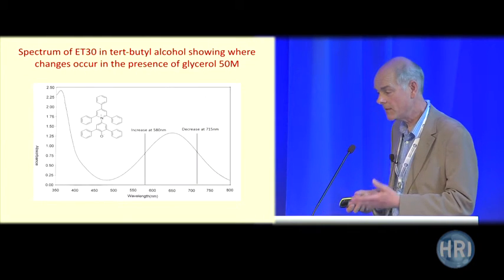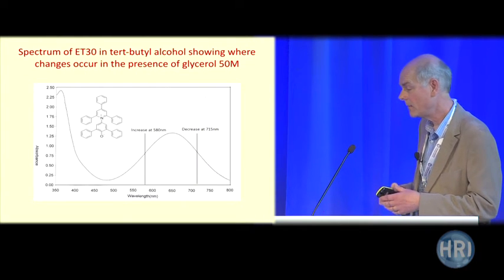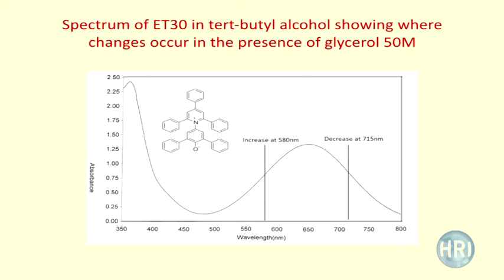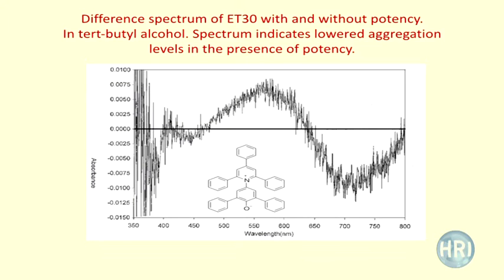ET30 is another similar dye, also zwitterionic in the ground state. In the presence of potency, it shows a decrease at 715 nanometres and an increase at 580. The difference spectrum is a particularly nice one — you can see a blue shift, a decrease at the red end and an increase at the blue end. So again, potencies are stimulating this dye to disaggregate in solution.